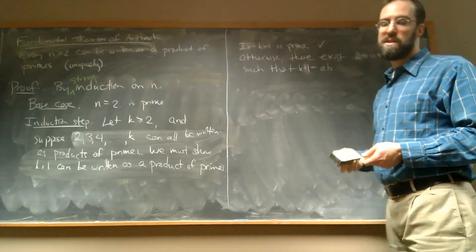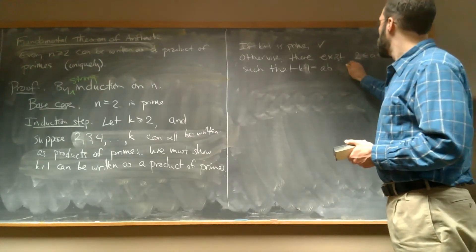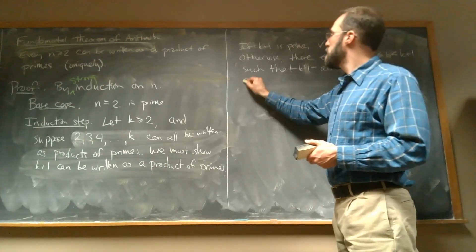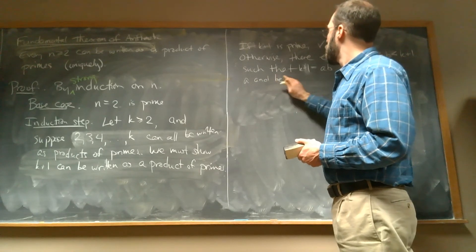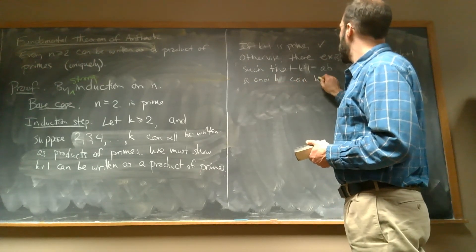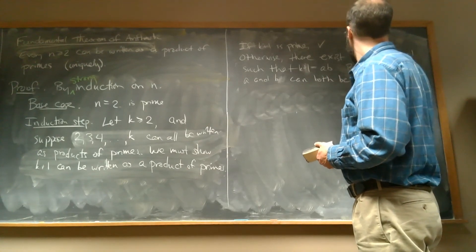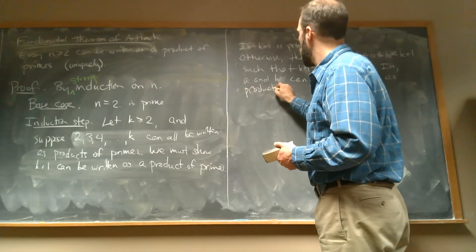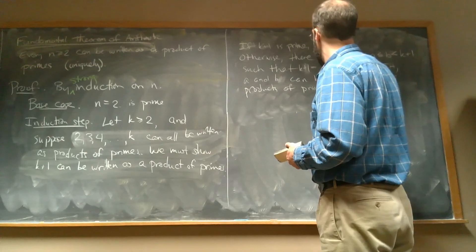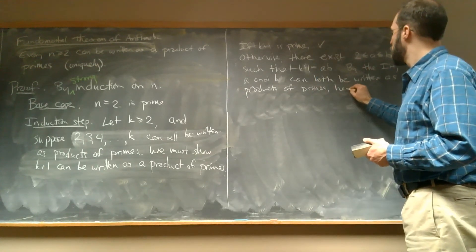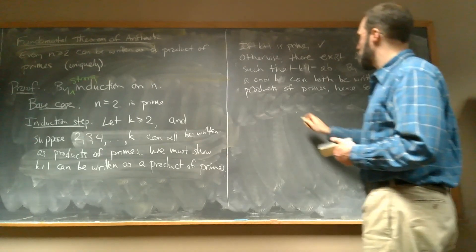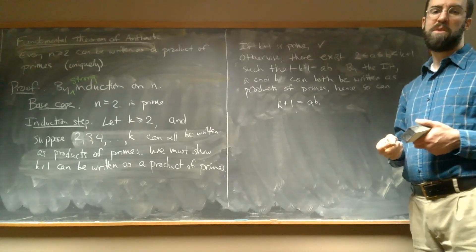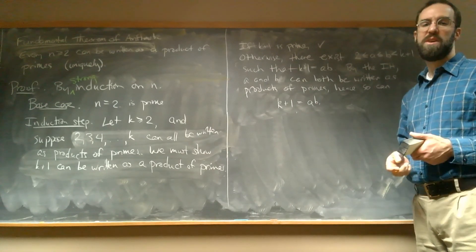We assumed that all those numbers in that list can be written as a product of primes. So by the induction hypothesis, A and B can both be written as products of primes. Hence, so can K plus 1, which is equal to a product of A and B. And a product of products of primes is itself a product of primes.